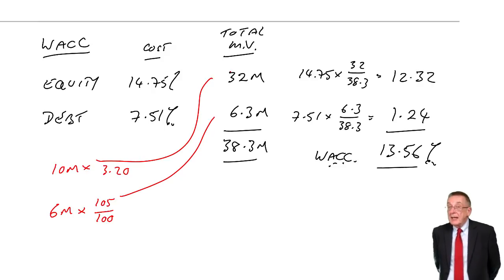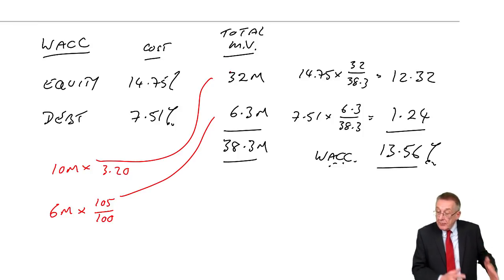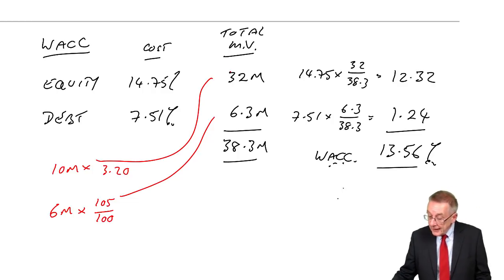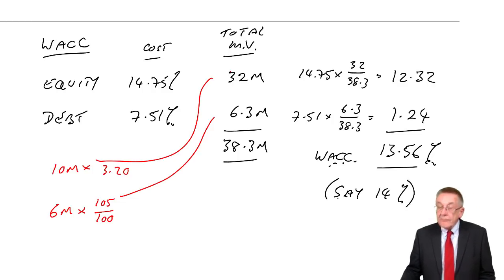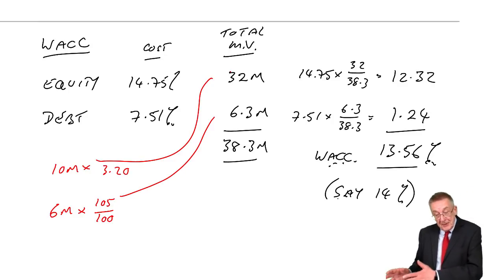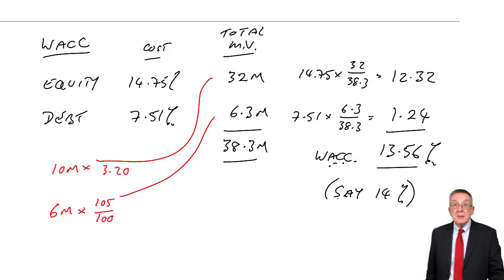If you were required to then appraise a project to get the net present value of a project, strictly we should discount at 13.56. In the exam, never show your workings to two decimal places, but if you were required to use it for discounting, you discount at the nearest whole percent in paper F9. Here you discount using the tables at 14%. You are bound to have to calculate a weighted average cost of capital somewhere in the exam.